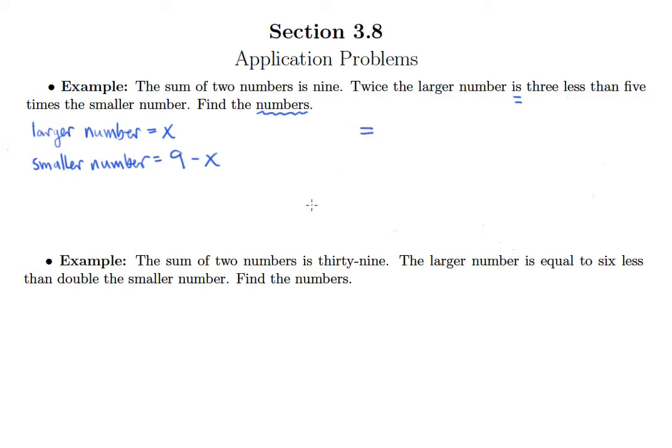So I'll put my equal sign here and that's going to allow me to just pay attention to what's on the left separately from what's on the right. So twice the larger number, well the larger number is x so twice the larger number would be 2x. Now we have three less than five times the smaller number on the right of the equal sign. So three less than means you're going to take three away from something. What is that something? Five times the smaller number. Well what is the smaller number? The smaller number is 9 minus x. So if you're going to multiply five by multiple terms you better put them in parentheses.